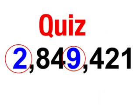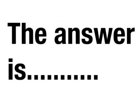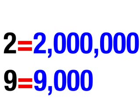Here is a quiz for you. If we were to ask you what is bigger, 2 or 9, most of you would say 9. But for this number, the answer would be different — the answer is 2. This is because the 2 is in the millions column and the 9 is in the thousands column. So really, it is obvious that the 2 is bigger than the 9.